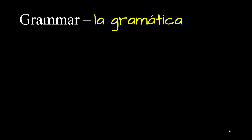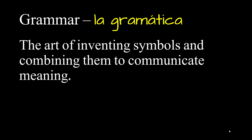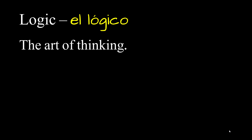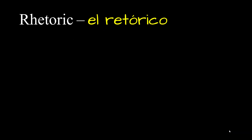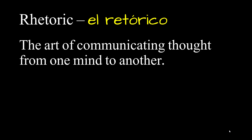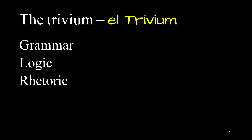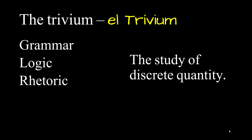Let's look at the trivium first. Grammar — la gramática — is the art of inventing symbols and combining them to communicate meaning. Logic — el lógico — is the art of thinking. And rhetoric — el retórico — is the art of communicating thought from one mind to another. These three are the trivium. We'll talk more about it later, but the trivium is the study of discrete quantity.